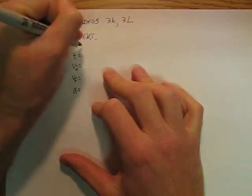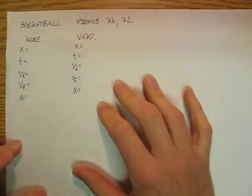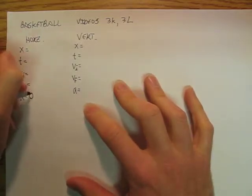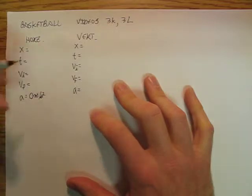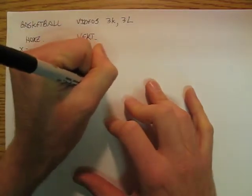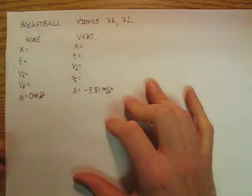Okay. Now, what do we know for sure? Well, going back, we know that the horizontal acceleration is 0 meters per second squared, and the vertical acceleration is going to be negative 9.81 meters per second squared.